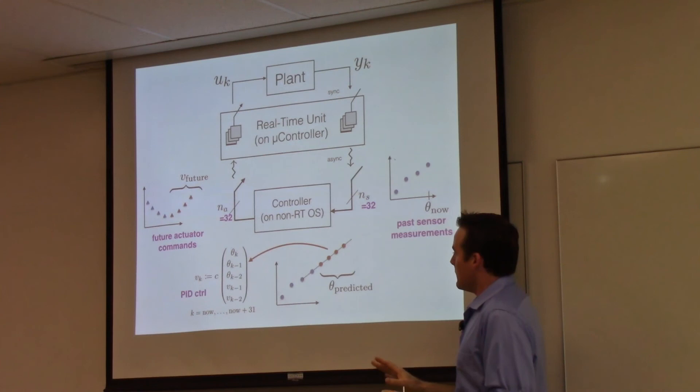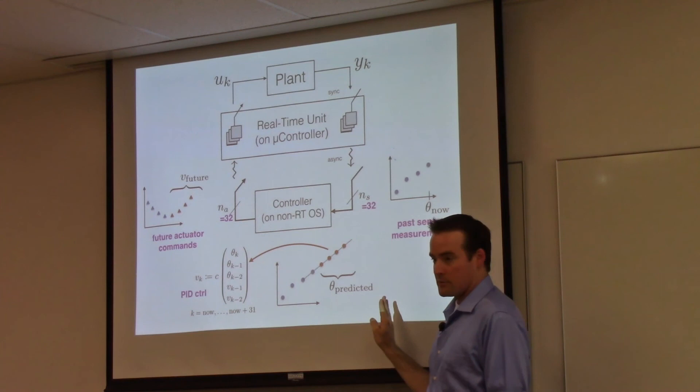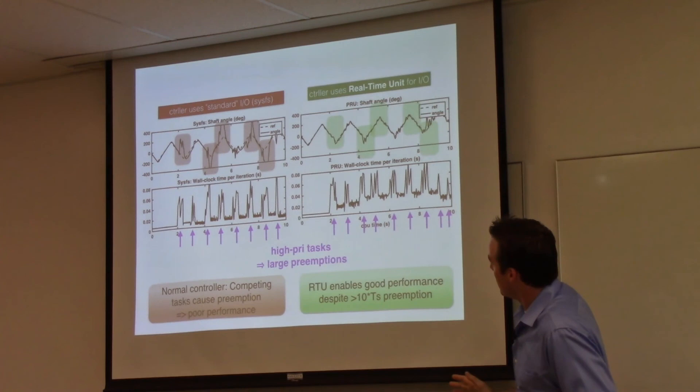This is not very, this is a pretty rudimentary predictor. There are lots of ways that you could use some sort of internal model of the system to predict what you would expect future measurements to do. We'll talk about that later, future sensors. But this is just a simple sort of linear extrapolation, and it works pretty well.